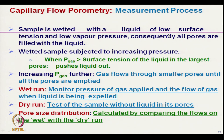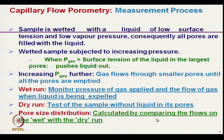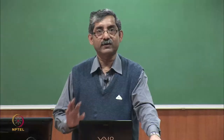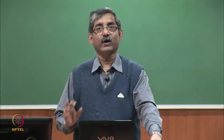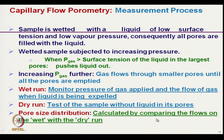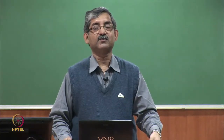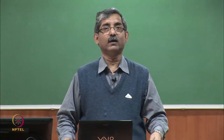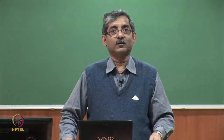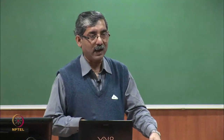To get accurate results without error, the process must be run in both wet run and dry run modes. In the wet run, gas is applied when the structure is saturated with liquid; in the dry run, the sample is dry without liquid in the pores. Pore size distribution is then calculated based on the flow data from both wet and dry runs.